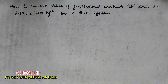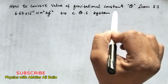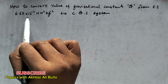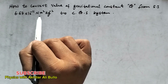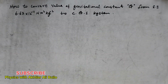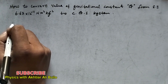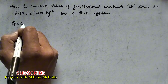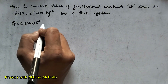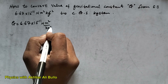Hello everyone, welcome to my YouTube channel. Today we will learn how to convert the value of the gravitational constant G from SI units — 6.67 × 10⁻¹¹ Newton meter squared per kilogram squared — to CGS units. In the MKS or SI system, the value of capital G is given as 6.67 × 10⁻¹¹ Newton meter squared per kilogram squared.